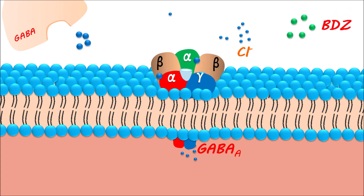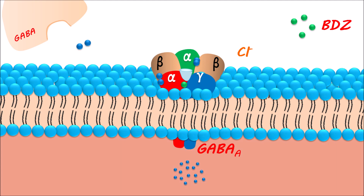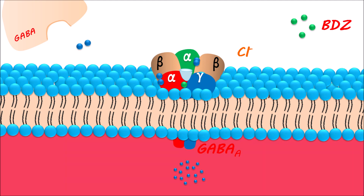Benzodiazepines act in a similar way to enhance the action of GABA. Benzodiazepines bind to a site between the alpha and gamma subunits that promotes the binding of GABA to the GABA-A receptors, leading to the entry of a greater number of chloride ions and resulting in significant hyperpolarization. As a result, benzodiazepines reduce anxiety and irritability while also inducing sleep and providing sedation. They also reduce the tendency for neuronal excitation, resulting in a reduced induction of seizures.